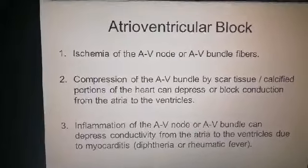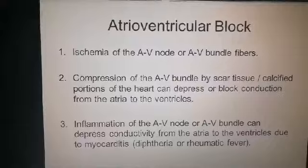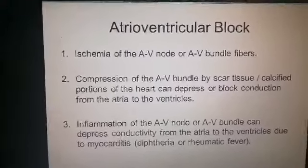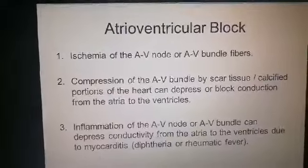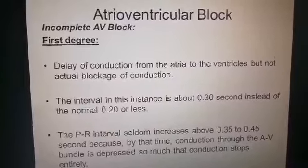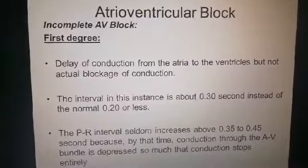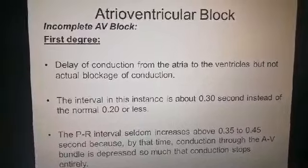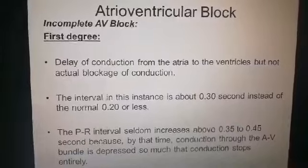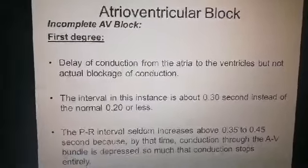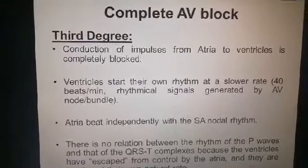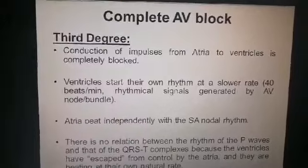So there are three conditions by which the AV node can be affected: ischemia, compression, and inflammation. The AV block is further divided into two types: incomplete AV block and complete AV block. Incomplete AV block further divides into first degree heart block and second degree heart block, while complete AV block includes the third degree block. We will study these one by one.